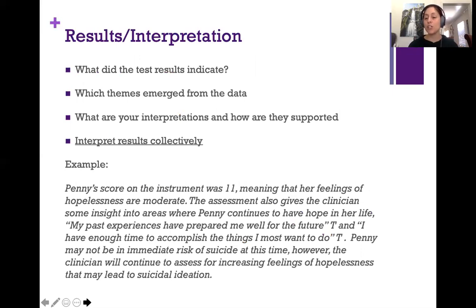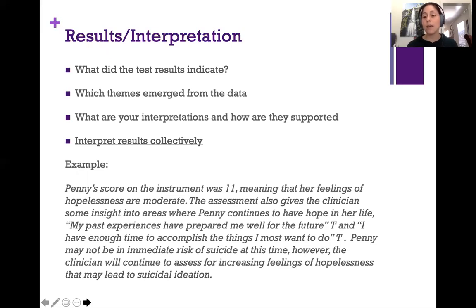Finally, you provide the results and interpretation for each of the measures. This includes a summary of what the test data indicated, any themes that emerged, which aspects of the data supported the conclusion, and overall implications for each instrument. Your interpretation should be collective — are the results of each assessment consistent with each other, do they contradict each other, how do they build upon each other? This is the one area where you don't need a separate section for each measure; rather, you base your interpretation on all measures collectively, along with all of the history and everything you know.